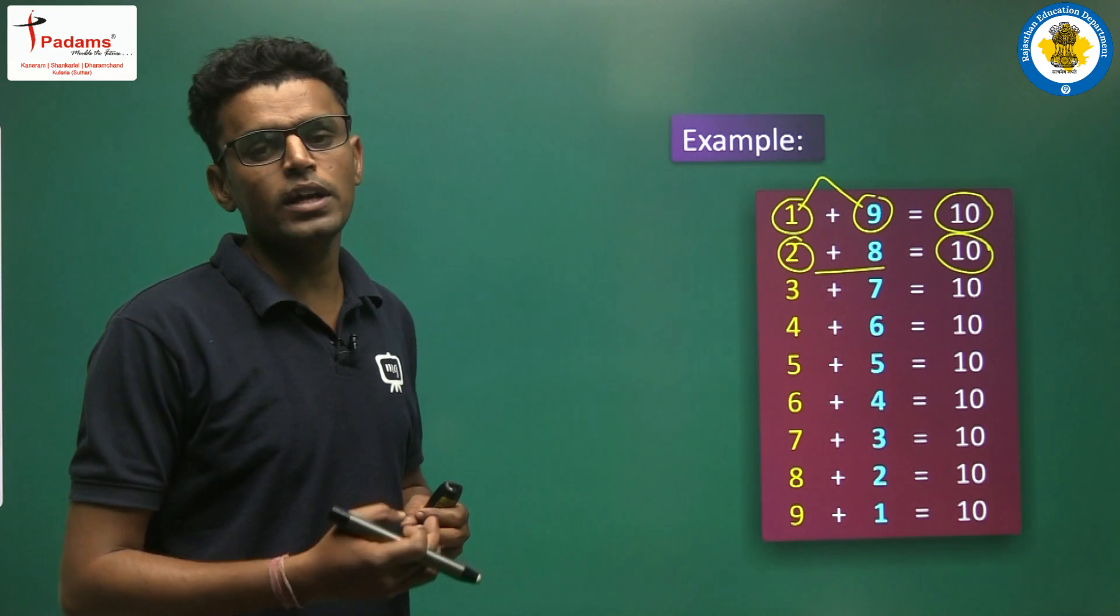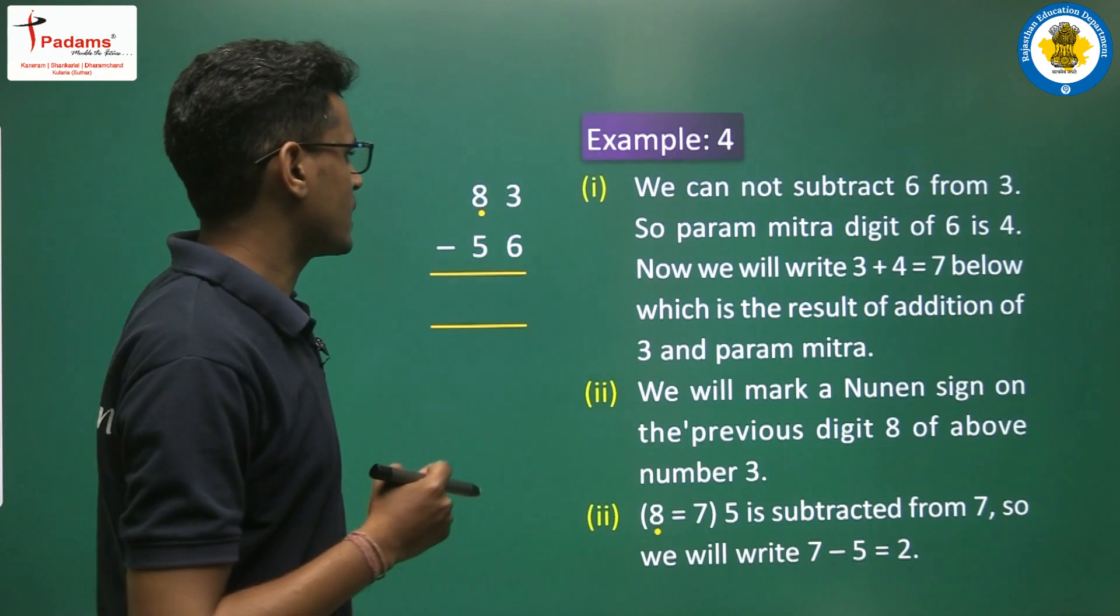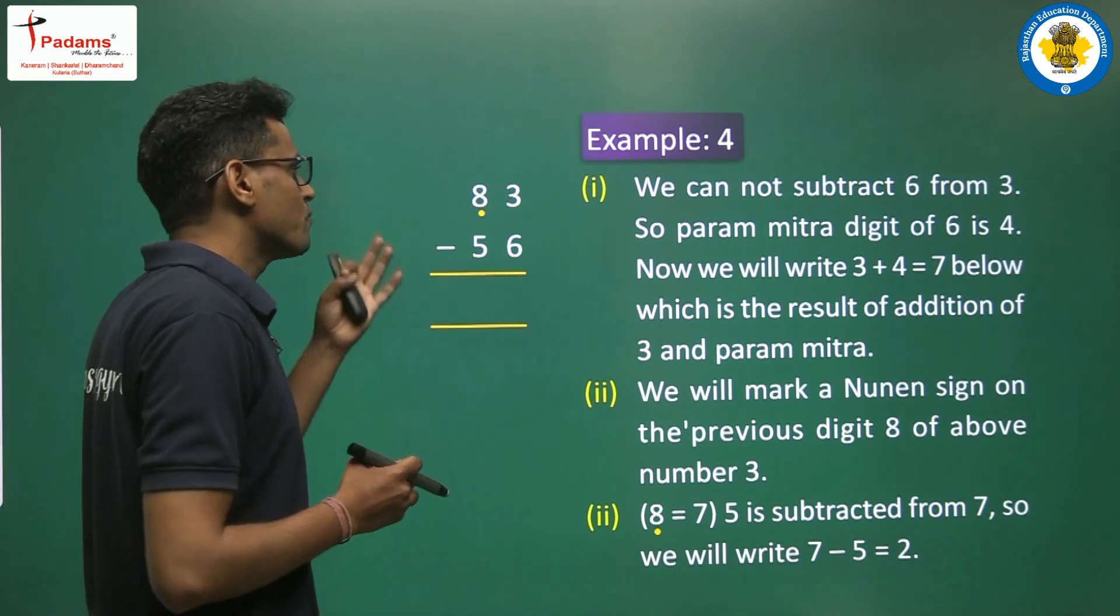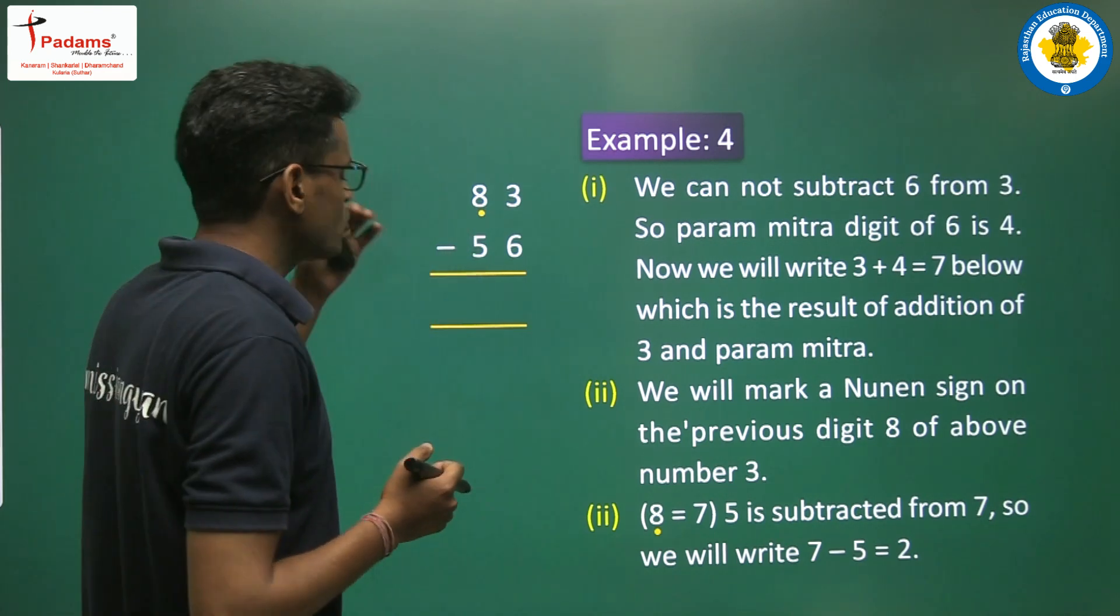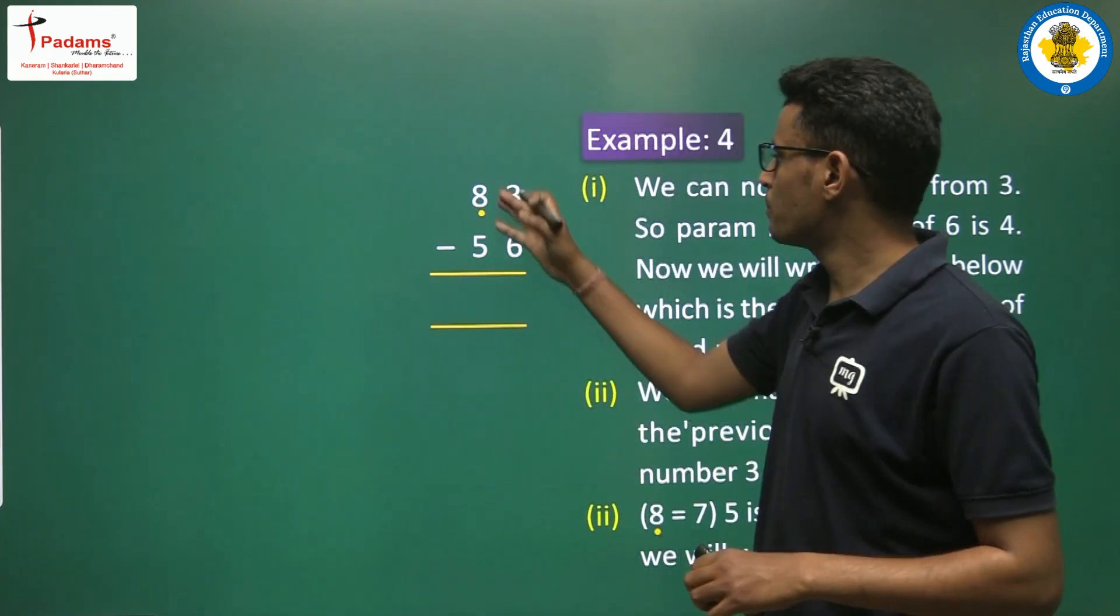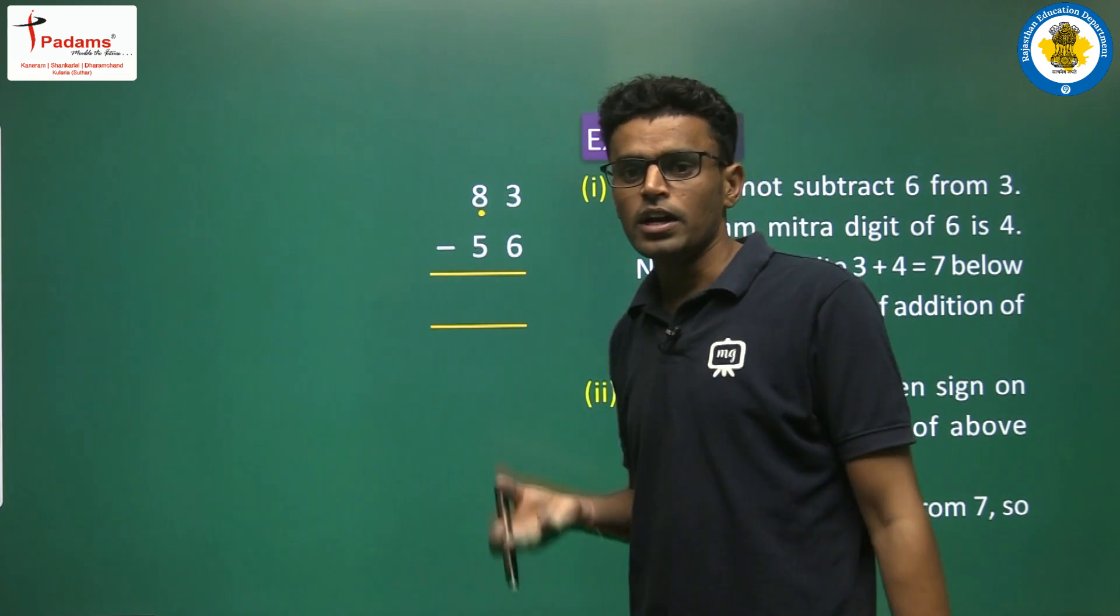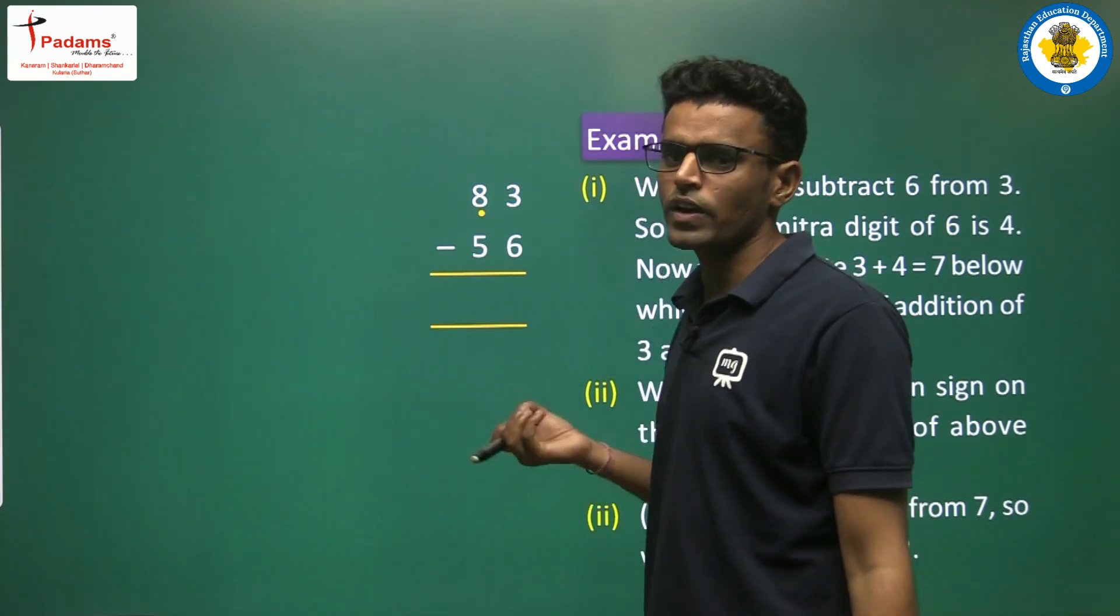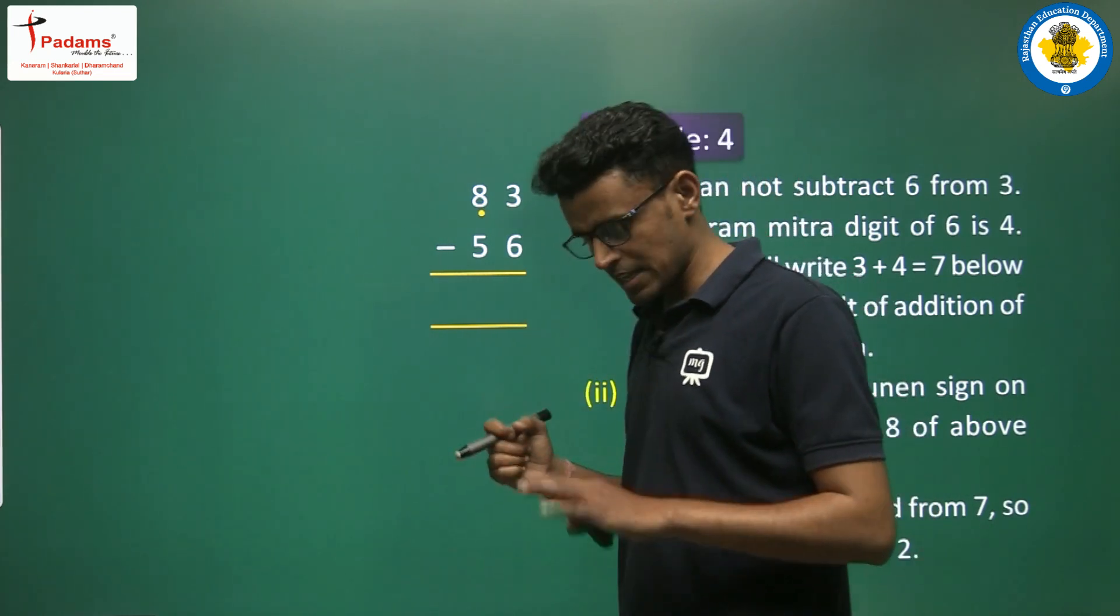Now how do we use this? Here is a number: 83 minus 56. We have to subtract 56 from 83. In our general math, we would start with the ones place. We check 3 is our first number, 6 is another number in the ones place value, so we can't subtract. We would need to borrow or carry over.